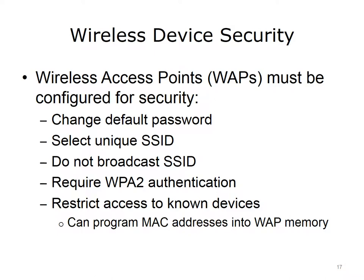Wireless security starts with the configuration of a WAP. An example of a WAP is the wireless router that many computer users have in their homes. WAPs in a corporate environment are much more robust than those used at home. Configuring a WAP for security requires changing the router's default password and configuring the router's Service Set Identifier (SSID). Wireless routers are shipped with default passwords, meaning anyone on the internet can look up the default password for a router. Routers should be configured so they do not broadcast the SSID, making it harder for others to find and connect. Good security requires Wi-Fi Protected Access Version 2 (WPA2) authentication.